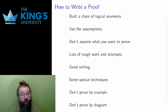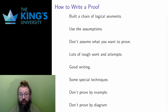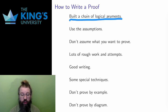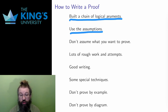That said, I will give you some pointers and ideas on how to start. Remember that a proof is a chain of logical arguments — you should see the structure in the proofs you write. Look out for any sudden jumps or gaps in the logic. You should use your starting assumptions. If you are proving something about a prime number but never use the fact that the number is prime, something very strange is going on.